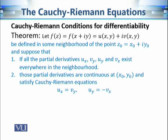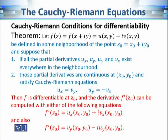The third condition is that these partial derivatives must be continuous. Remember, when we discussed Cauchy-Riemann equations earlier, we did not impose the condition of continuity — only that the partial derivatives exist. Here we impose the extra condition that the partial derivatives must also be continuous. And of course, the Cauchy-Riemann equations must be satisfied: u_x = v_y and u_y = −v_x.